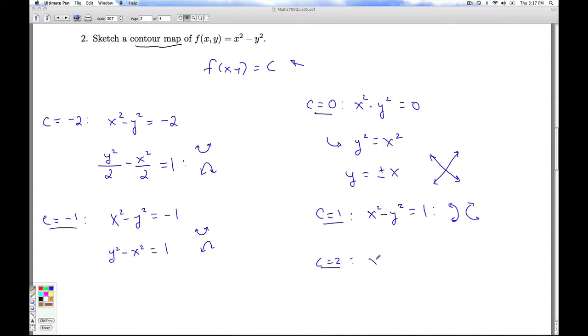And c equals 2. x squared minus y squared equals 2. That's going to be a hyperbola. To put it in standard form, I'll divide everything by 2. And once again, that's a hyperbola that's going to open left and right.